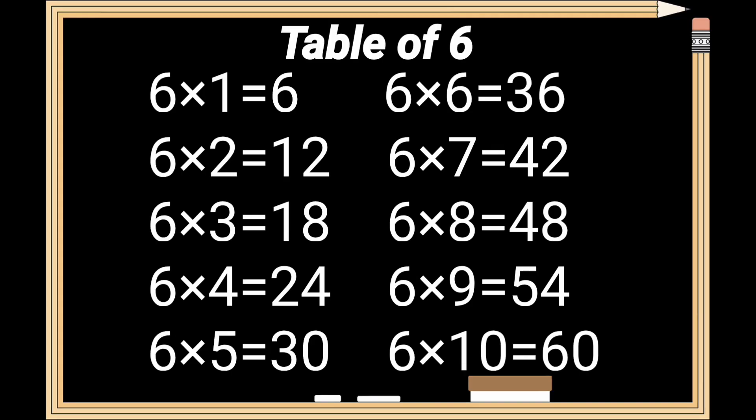Table of 6 review. 6 times 1 is 6. 6 times 2 is 12. 6 times 3 is 18. 6 times 4 is 24. 6 times 5 is 30. 6 times 6 is 36. 6 times 7 is 42. 6 times 8 is 48. 6 times 9 is 54. 6 times 10 is 60.